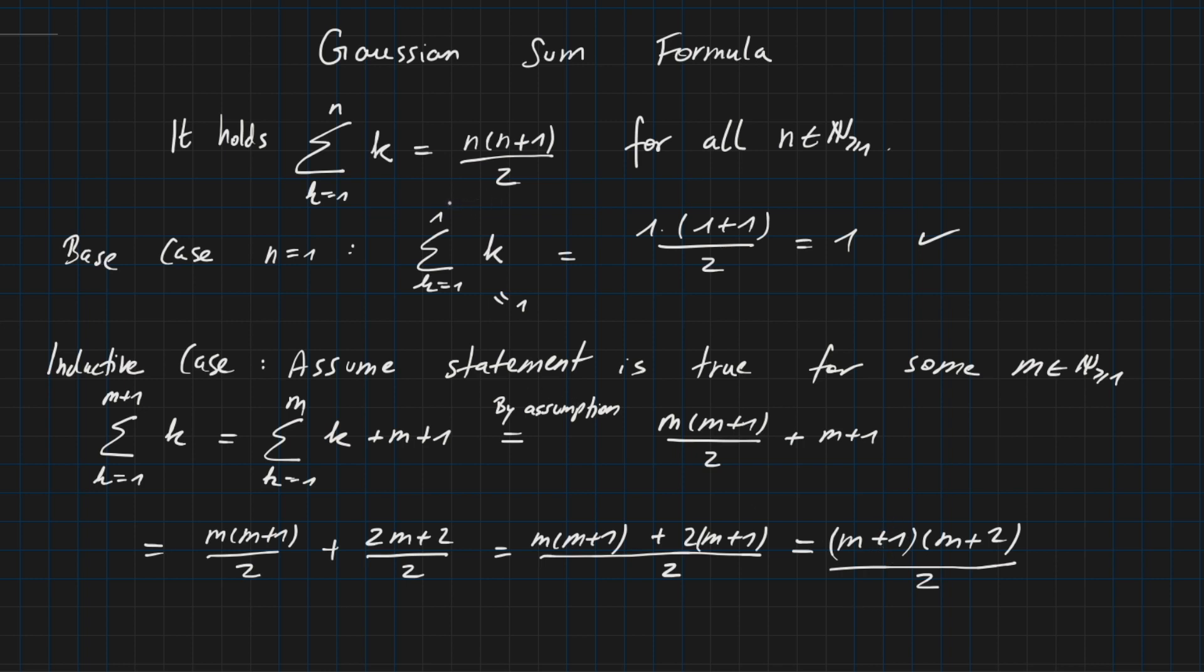So this is the formula when inserting m plus 1 for n. So if you are inserting m plus 1 here for n, you are getting exactly the term we have here at the end. So this proves that the statement is also true for m plus 1, and we assume that it was true for m. So this concludes our proof.